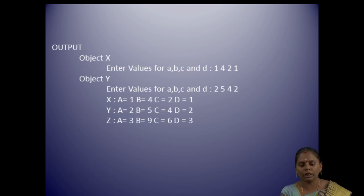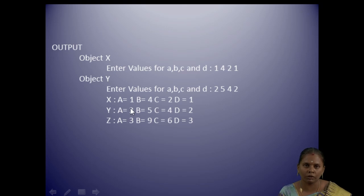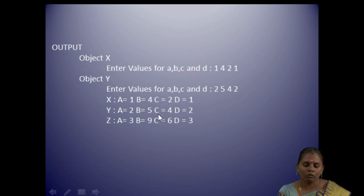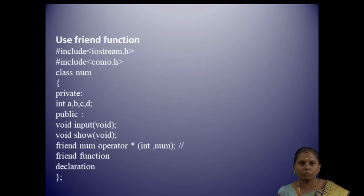The output shows: for object x, values a=1, b=4, c=2, d=1; for object y, values a=2, b=5, c=4, d=2. The result z = x + y gives: a=1+2=3, b=4+5=9, c=2+4=6, d=1+2=3. Next we are going to do the same binary operator overloading using the friend function.